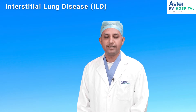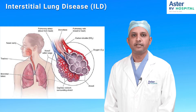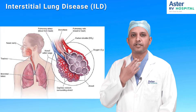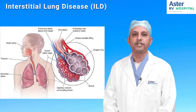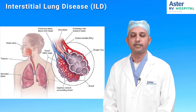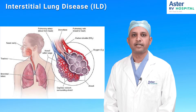Before understanding what ILD is, let's try to understand how a normal lung functions. When we normally breathe in, we breathe in air through either nose or mouth and that air goes through the throat, into the trachea, into the windpipe and into the lungs. Inside the lungs there are air sacs called alveoli wherein gas exchange happens between oxygen and carbon dioxide. The oxygen in the air we breathe in is transferred to the body and the carbon dioxide produced as a by-product of metabolism is exhaled out.